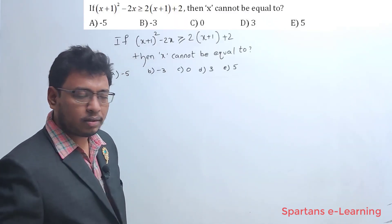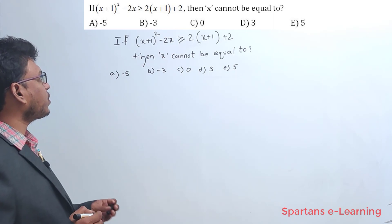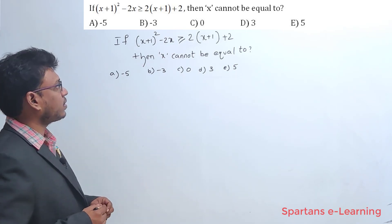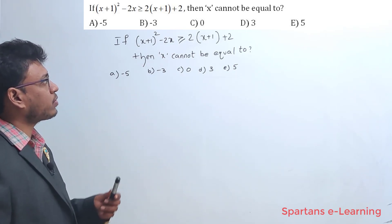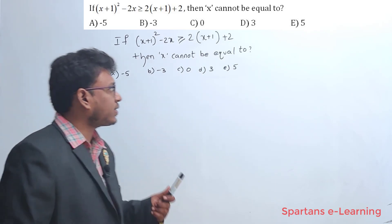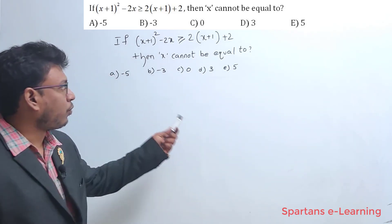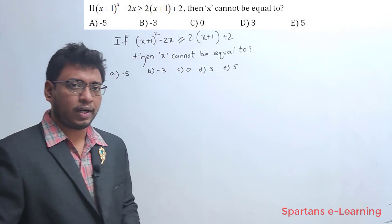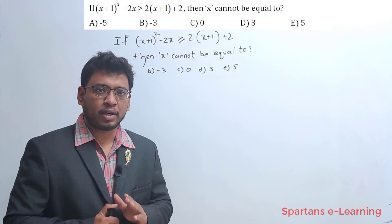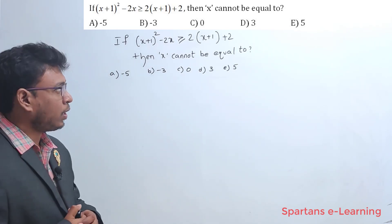Here is the question. The question says: if (x+1)² - 2x is greater than or equal to 2(x+1) + 2, then x cannot be equal to which of the following options? Now before solving this question, pause the video and try to solve this question on your own.